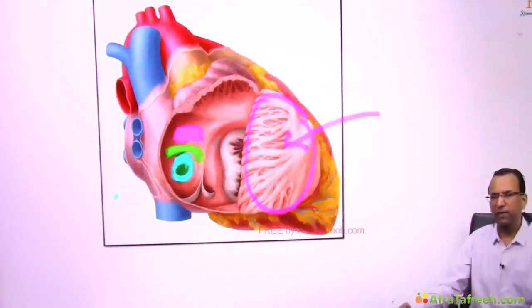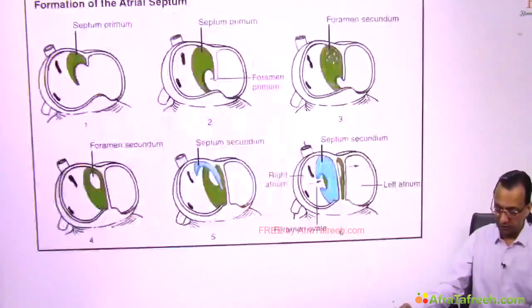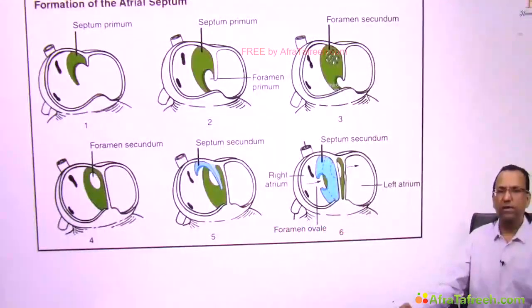This fossa ovalis will have a thickened margin called limbus fossa ovalis. It is the remnant of the foramen ovale in the fetal circulation. This is what we want to discuss now — the formation of the inter-atrial septum.